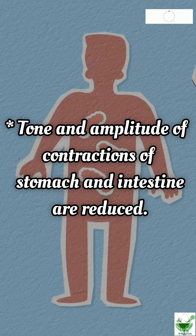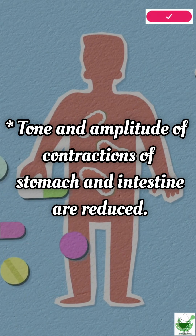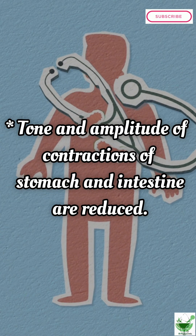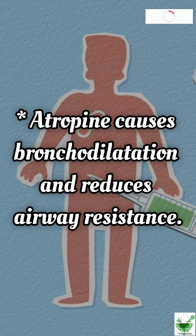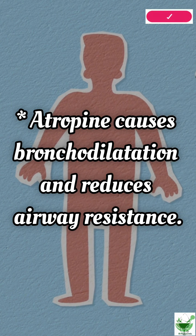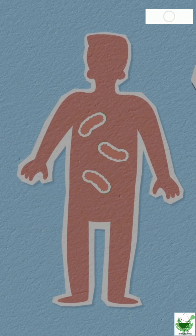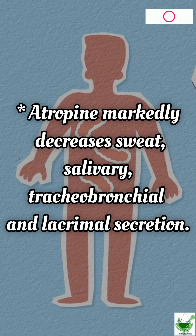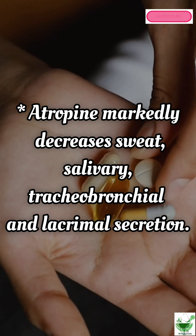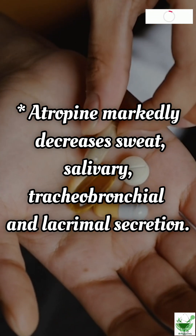Tone and amplitude of contractions of the stomach and intestine are reduced. Atropine causes bronchodilation and reduces airway resistance. Atropine markedly decreases sweat, salivary, tracheobronchial, and lacrimal secretion.